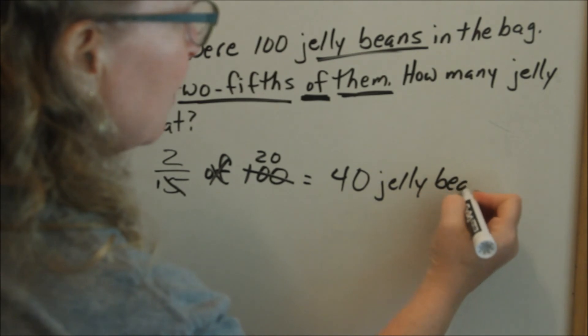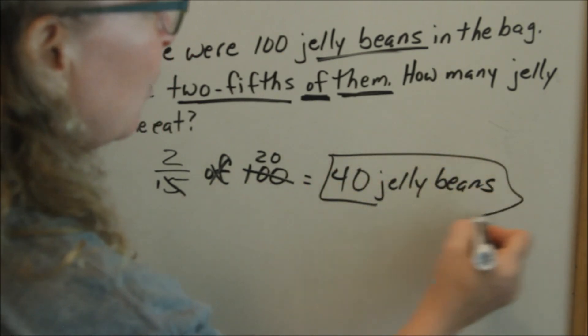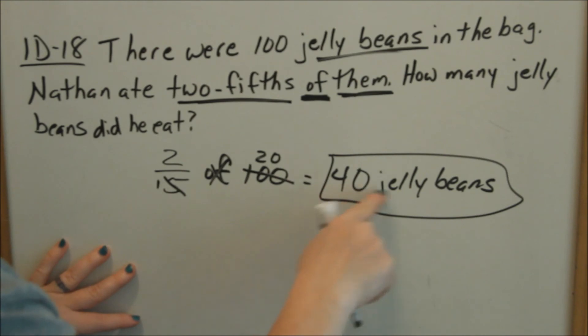So having the word jelly beans is really important because you want to tell whoever what does 40 represent. 40 jelly beans, 40 dollars, 40 rocks, 40 candy bars. So here, 40 jelly beans.